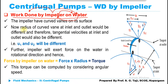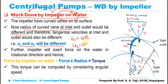The radius of the curved vane at the inlet and outlet are different, so U1 and U2 will both be different. U1 is the tangential velocity at the inlet and U2 is the tangential velocity at the outlet. Both can be calculated using Omega × R1 and Omega × R2 equals U2, where Omega is the angular speed and R1, R2 are the radii of the impeller at the inlet and outlet.